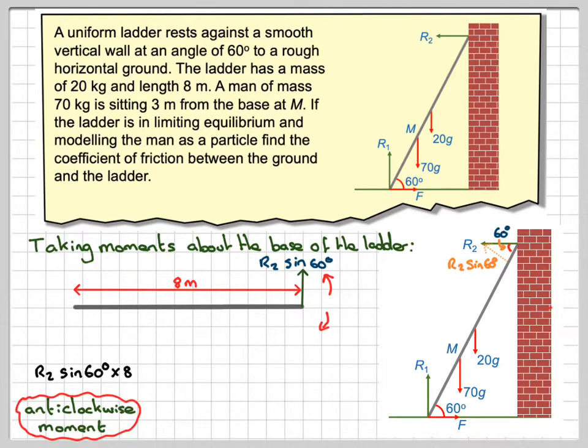Now, clockwise, I've got this force here. So, I'm going to bend this force down here. Okay, this angle is 60. So, this is going to be 20G cos 60. So, that's going to be 20G cos 60 times 4.